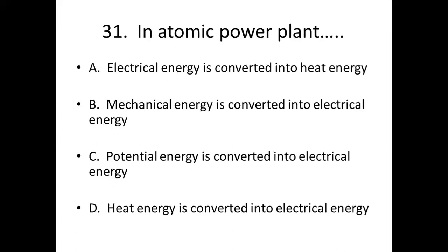31st bit: In an atomic power plant, dash. Option A: Electrical energy is converted into heat energy. Option B: Mechanical energy is converted into electrical energy. Option C: Potential energy is converted into electrical energy. Option D: Heat energy is converted into electrical energy. Answer — Option D: Heat energy is converted into electrical energy.